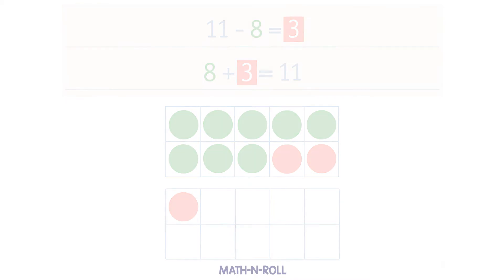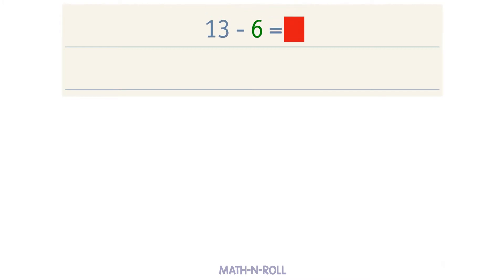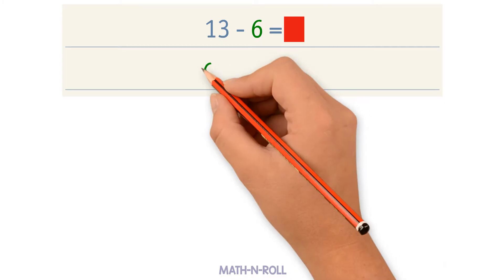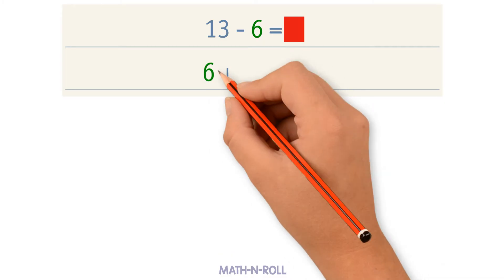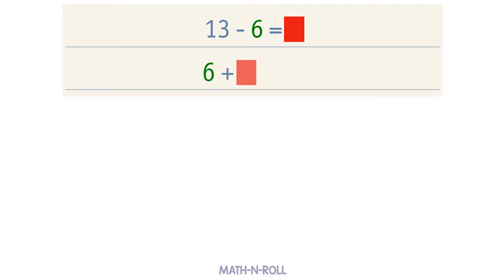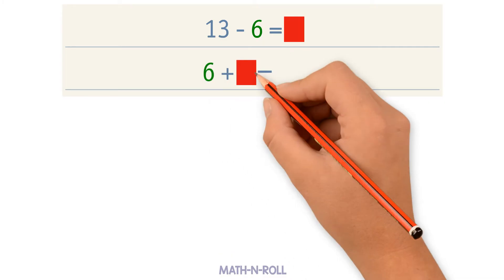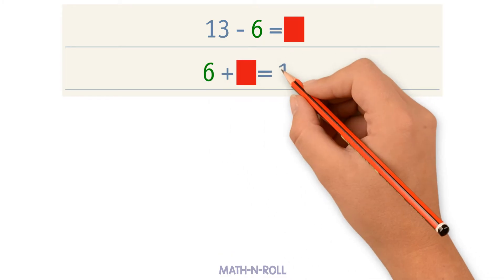Let's try another example. 13 minus 6 equals an unknown number. Let's write a related addition fact to solve: 6 plus an unknown number equals 13.